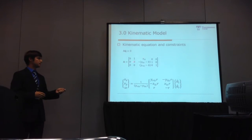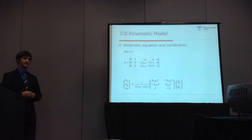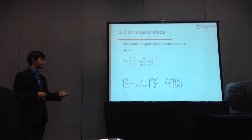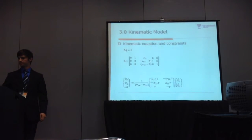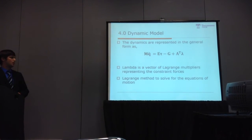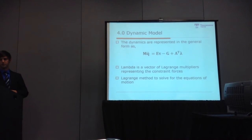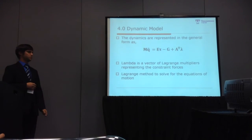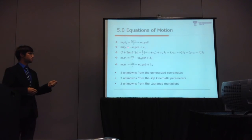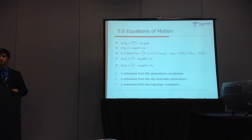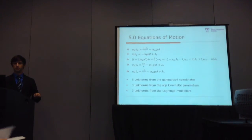Here are our kinematic equations — this is just a constraint matrix. Our generalized coordinates represent chassis input as VX and Omega. This is our dynamic model; lambda is a vector of Lagrange multipliers representing the constraint forces, and we're using a Lagrange method to solve. These are the five equations of motion expanded, one for each of the generalized coordinates. Traditionally, these five equations contain eight unknowns from the generalized coordinates.